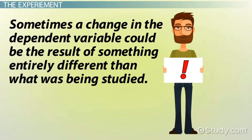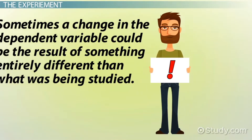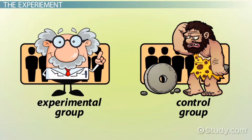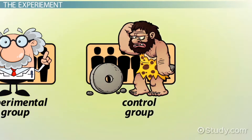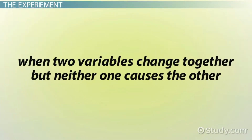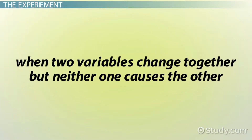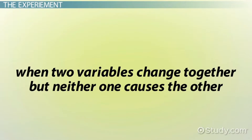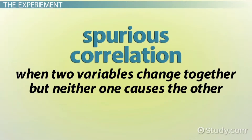It is important to note that sometimes a change in the dependent variable could be the result of something entirely different than what was being studied. Maybe, for example, those chosen for the experimental group were simply more intelligent than those in the control group. When two variables change together but neither one causes the other, we call this a spurious correlation.